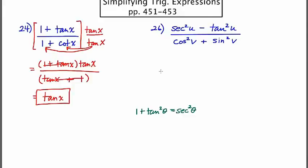So I can replace the entire numerator with one, and then the denominator is sine squared plus cosine squared, which is also one. So the answer here is one.